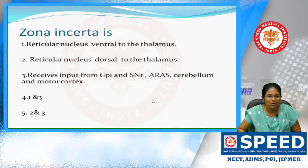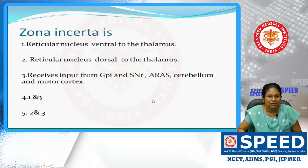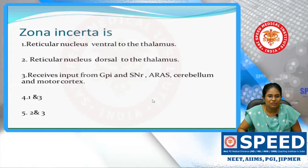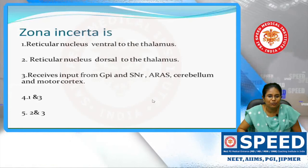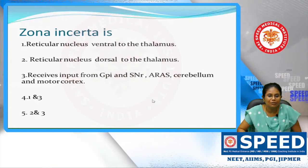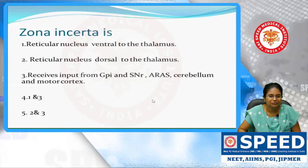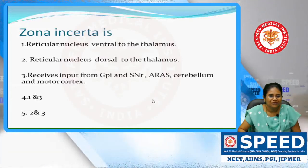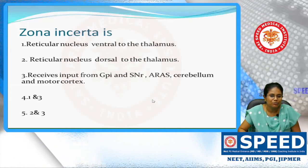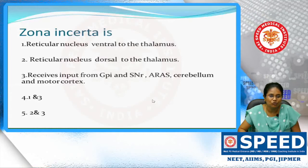What is zona incerta? The options are: reticular nucleus ventral to the thalamus, reticular nucleus dorsal to the thalamus, receives input from GPi, substantia nigra, ascending reticular activating system, cerebellum, and motor cortex. The answer is 1 and 3 — it is a reticular nucleus ventral to the thalamus, and it receives input from GPi, substantia nigra reticulata, the ascending reticular activating system, cerebellum, and motor cortex.